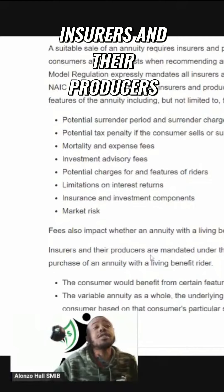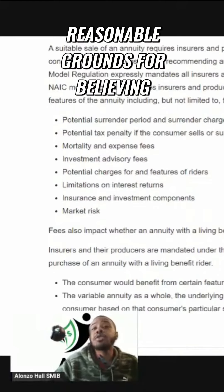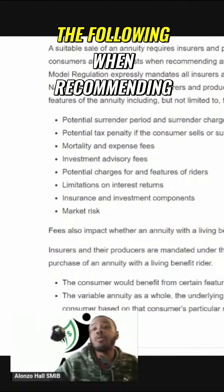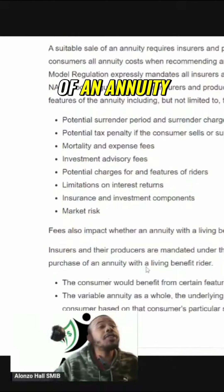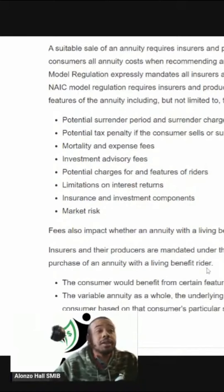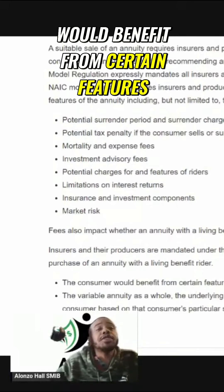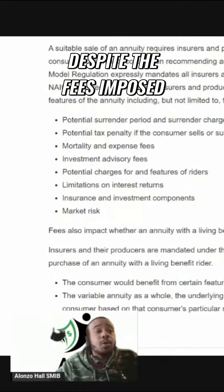Insurers and their producers are mandated under the NAIC model regulation to have reasonable grounds for believing the following when recommending to a consumer the purchase of an annuity with a living benefit rider: that the consumer would benefit from certain features of the variable annuity, such as living benefits, despite the fees imposed.